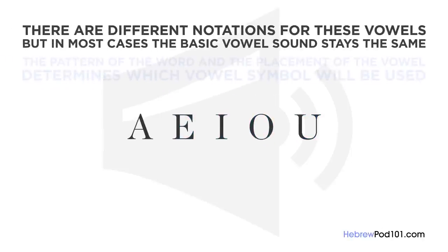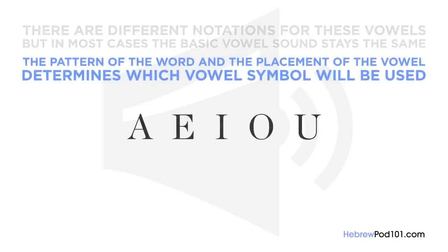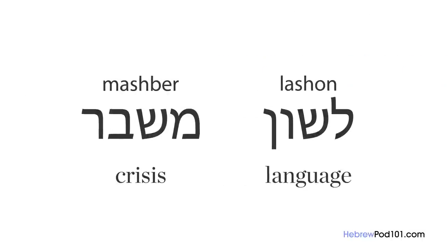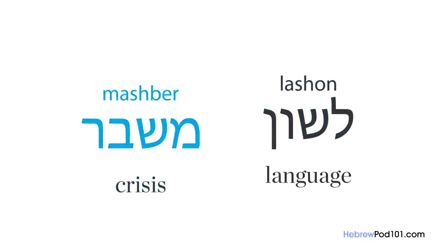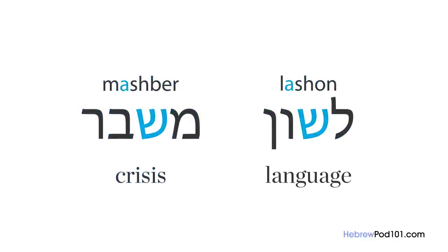There are different notations for these vowels, but in most cases the basic vowel sound stays the same. The pattern of the word and the placement of the vowel determines which vowel symbol will be used. For example, the word for language and the word for crisis both have vowels after the first letter, but because of the way the word is constructed, the vowels are notated differently.